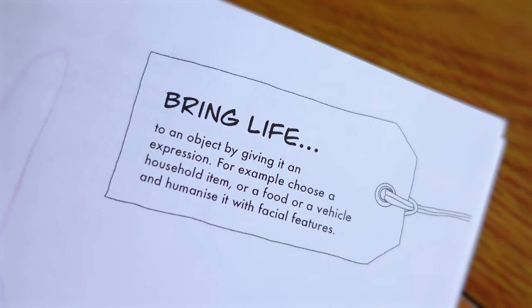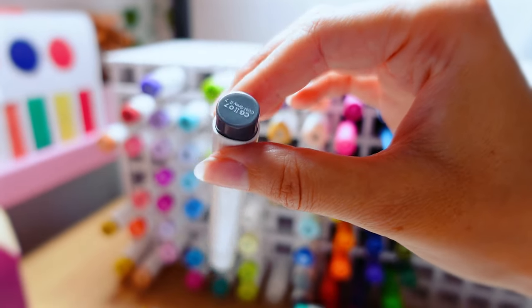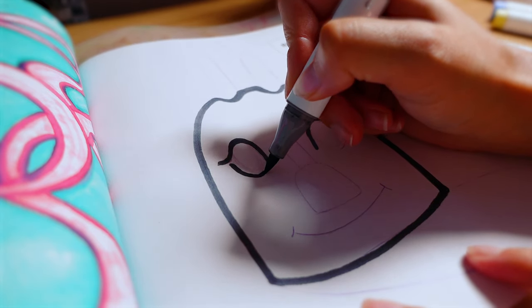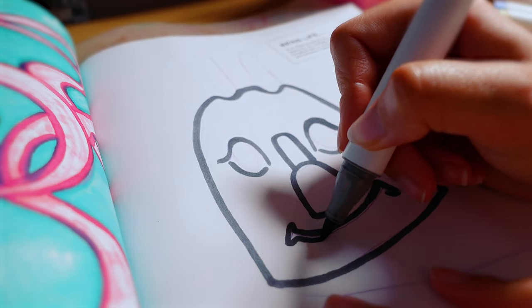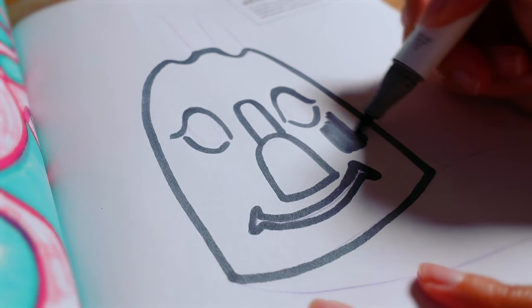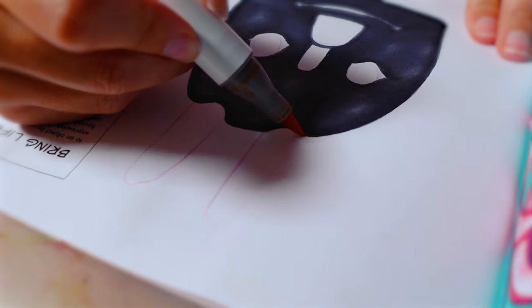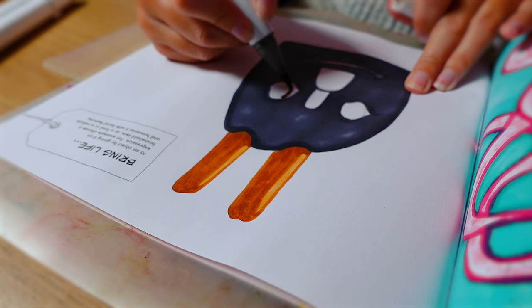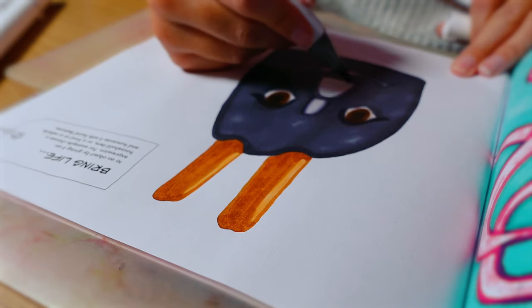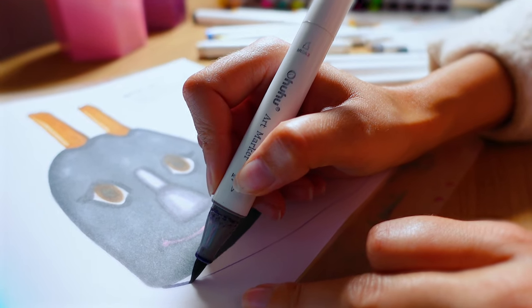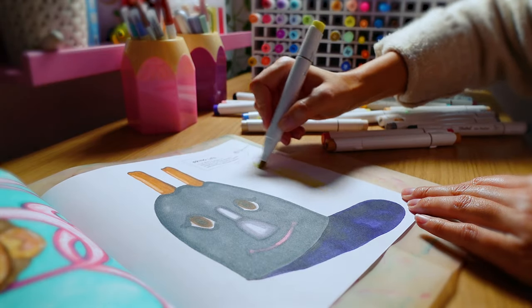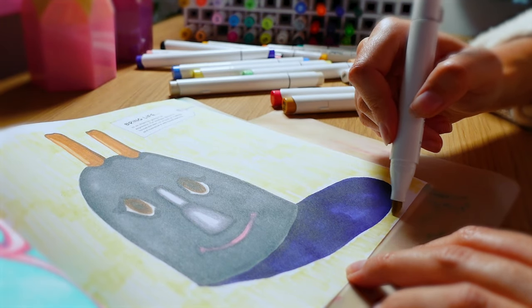Moving on. Bring life to an object by giving it an expression. For example choose a household item or a food or a vehicle and humanize it with facial features. Can you guess what we're drawing? Can you guess? Should I tell you baby? I'll let you guess. You can see, can you see? This was actually my partner's idea. I'm attempting to humanize a toaster. So the nose is the handle that goes up and down. Obviously the eyes and mouth don't need to be there but the bread kind of looks like ears and I think this one looks pretty cute. It kind of reminds me of like a rabbit or something. I don't know. Can you see the vision? Does it look like a toaster?